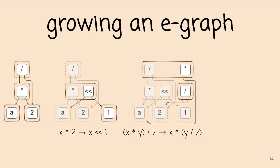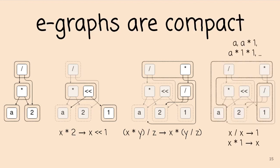We can keep rewriting — applying the reassociation of multiplication and division, and then the cancellation and identity rewrites. Notice these final two rewrites don't actually add any more E-nodes; they decrease the number of E-classes. We've actually shrunk the E-graph but added more information — more equivalent terms stored in the graph. In fact, there's an infinite number: the top E-class represents the infinite set of terms a, a times one, a times one times one, and so on, because there's a cycle where the multiply operator's left child is the E-class that contains it.